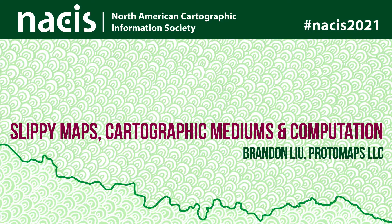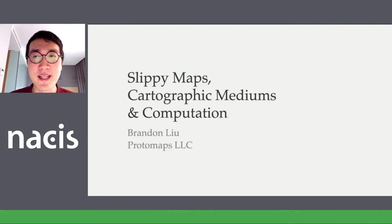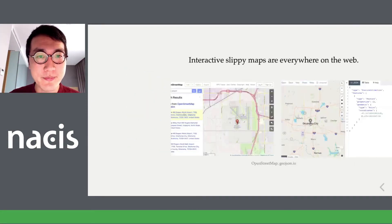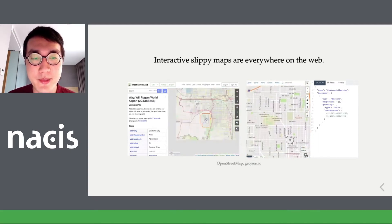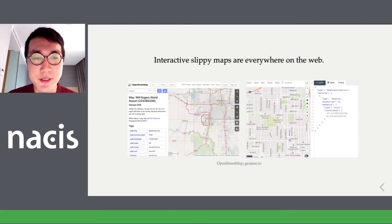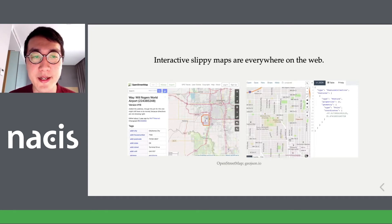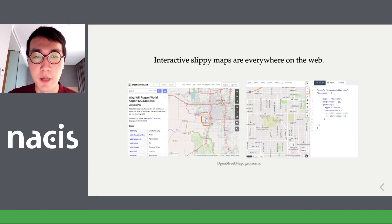Hey everyone, I'm Brandon, and I'm here at NASIS to talk about slippy maps, mediums, and computation. A slippy map is the most ubiquitous kind of interactive map on the web — it's usually panable, zoomable, and often embedded in some sort of application or visualization. As an example, I'm using these OpenStreetMap-based slippy maps in these videos right here.